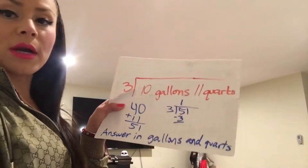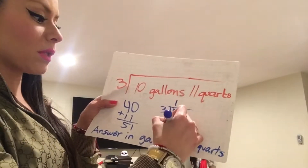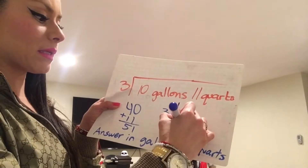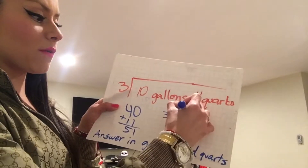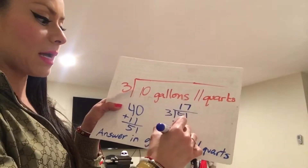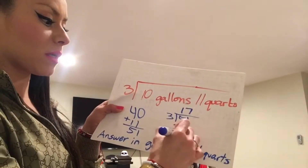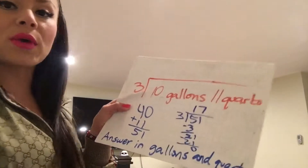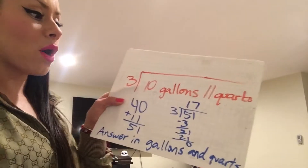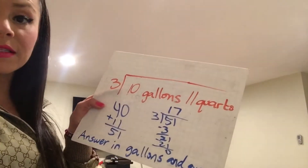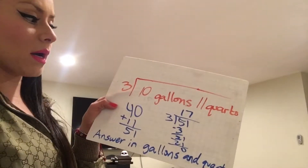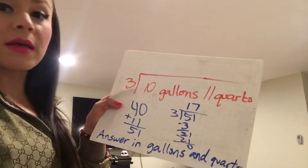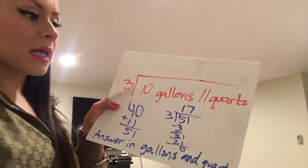3 into 51: 3 fits into 5 one time, we subtract and have 2 left over. Bring down the 1 — 3 into 21 fits seven times, that's 21, so we have nothing left over. We have a total of 17 — 17 quarts.